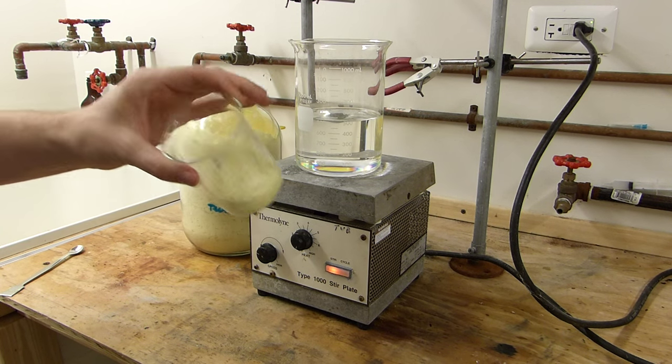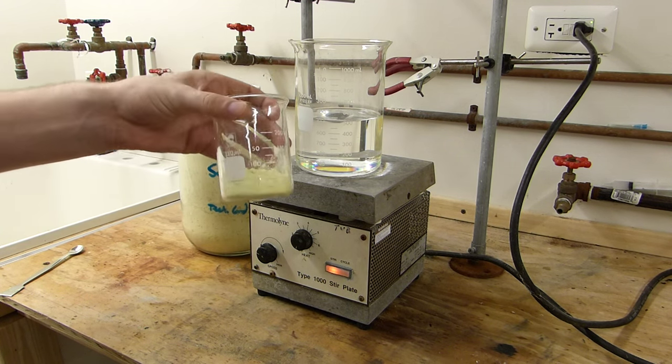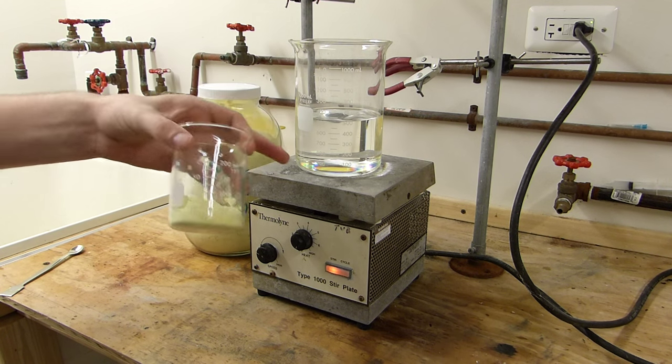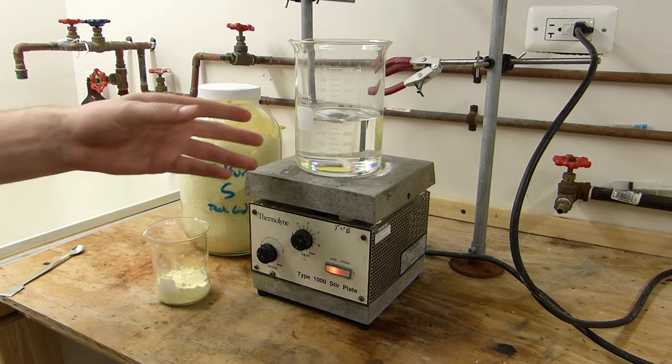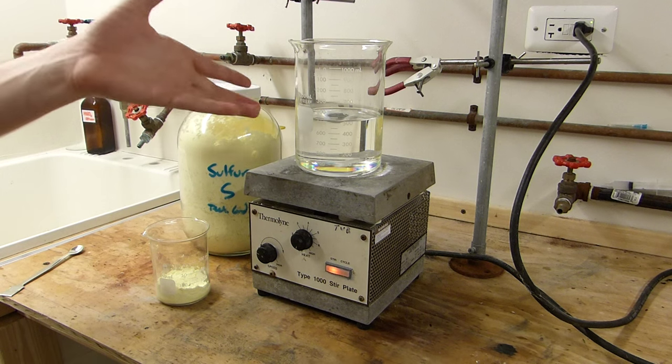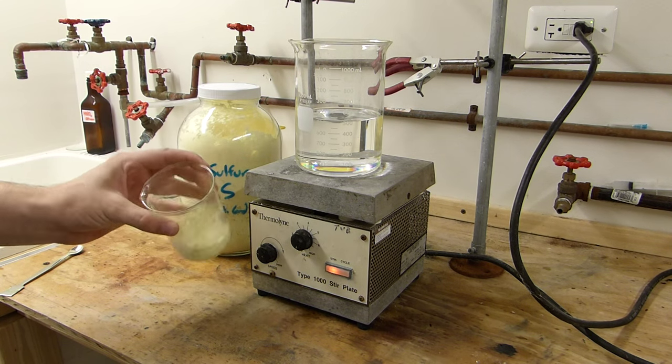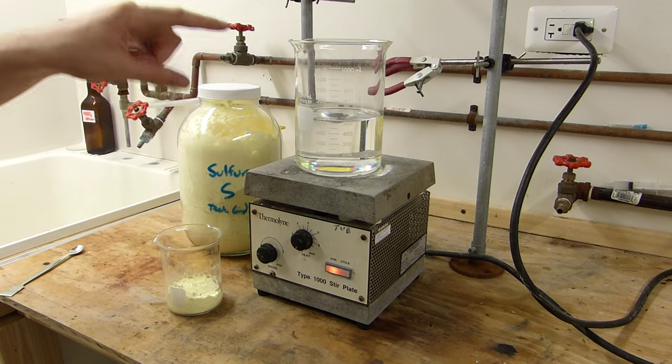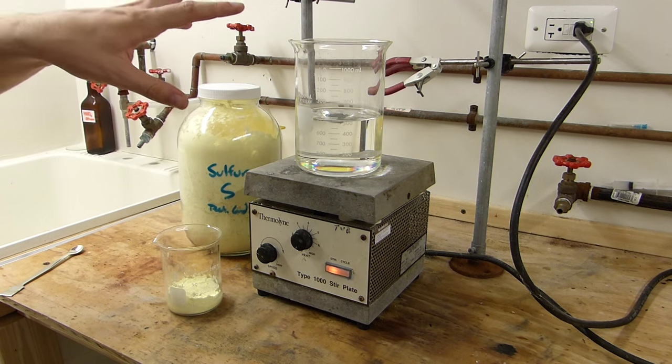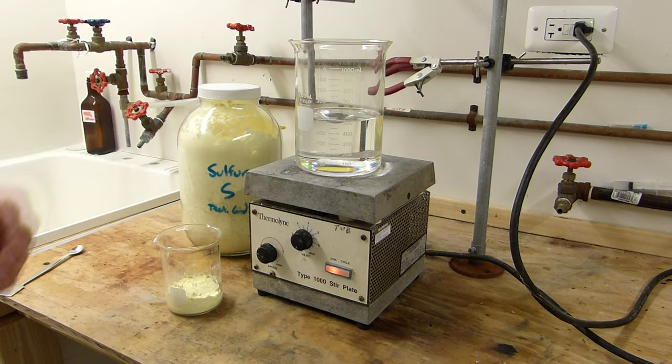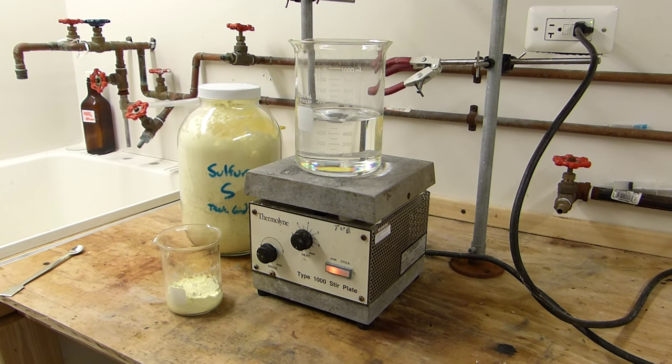So the plan is to simply add 50 grams of impure sulfur to the xylenes, heat and stir until all of the sulfur is dissolved, and then we can filter the solution to remove some of the impurities that are not soluble in the xylenes, and then we can allow the sulfur to crystallize back out after putting it in the refrigerator.